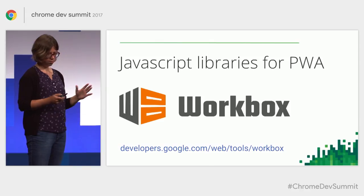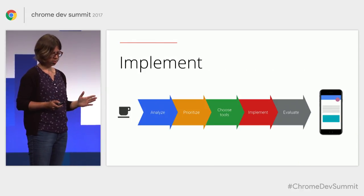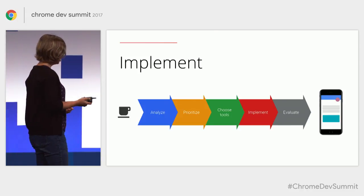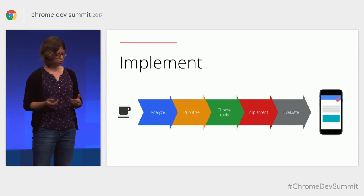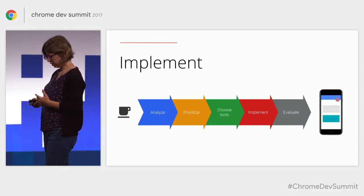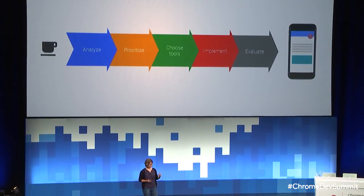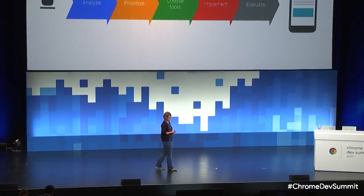OK, so we have Workbox, we have our priorities set. Now it's time to implement. And this is the hardest part to give any really generic advice on because each project is different. So instead, I would like to share some examples of the right UX patterns and implementation decisions that you might find useful when trying to achieve this happiness and progressive feel of your website.